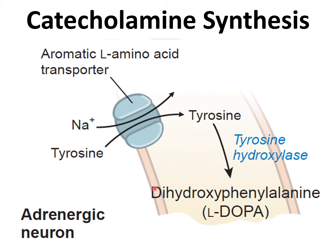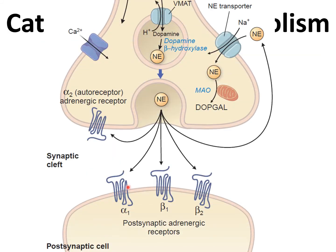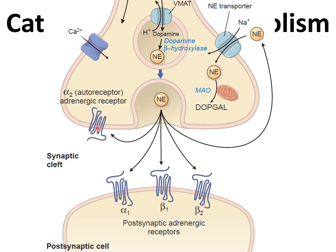Here is the upper part of an axon where there is an aromatic amino acid transporter — a symport where sodium is co-transported, bringing tyrosine into the axoplasm. Inside the axoplasm, tyrosine is converted into L-DOPA. The enzyme responsible for this step is tyrosine hydroxylase.